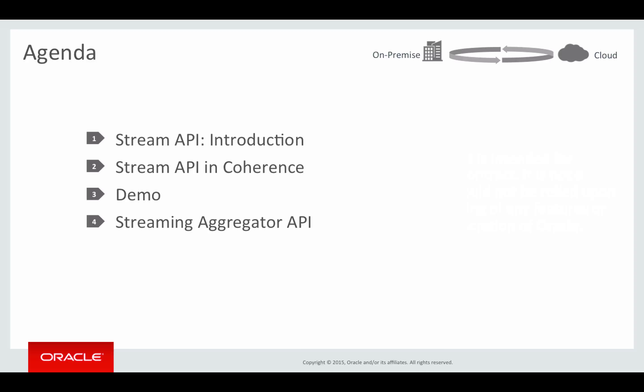In the first part of this presentation we will cover what the Stream API is and what it gives us that we didn't have before. We'll look at a number of examples that show its power and explain different types of stream operations and other constructs used in the API. In the second part we will take a deeper look into Coherence 12.2.1's implementation of what we call Stream API on steroids, which allows you to take parallel stream processing to a whole new level — from thread-based parallelization within a single process to parallel processing across many processes and machines, potentially utilizing hundreds of CPU cores.